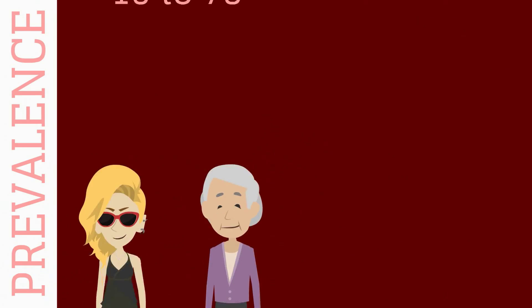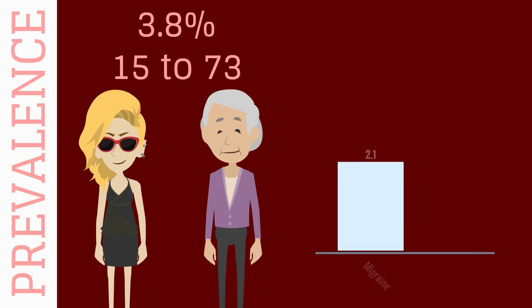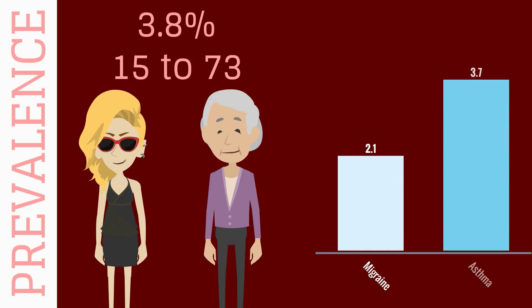The prevalence of chronic pelvic pain is 3.8% of women aged 15 to 73, which is higher than the prevalence of migraine at 2.1% and asthma at 3.7%.